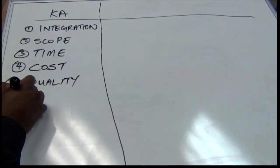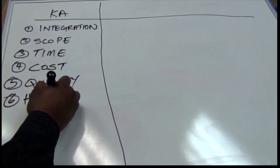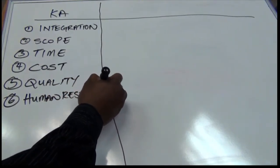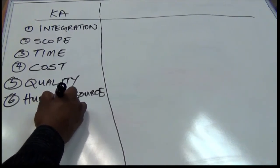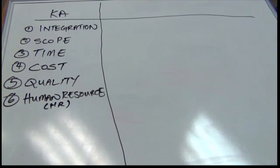The sixth area is called human resource management — I'll leave that as human resource, or HR. Human resource management is all about acquiring the team, developing the team, and managing the team. It's a skill to acquire good people. Developing people is also a skill. Managing those resources is also a skill.